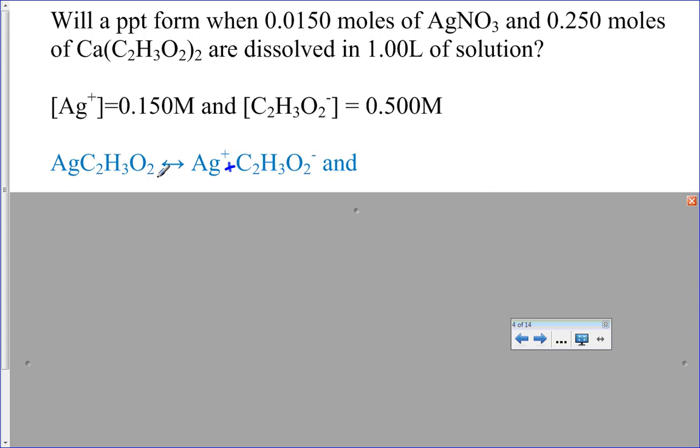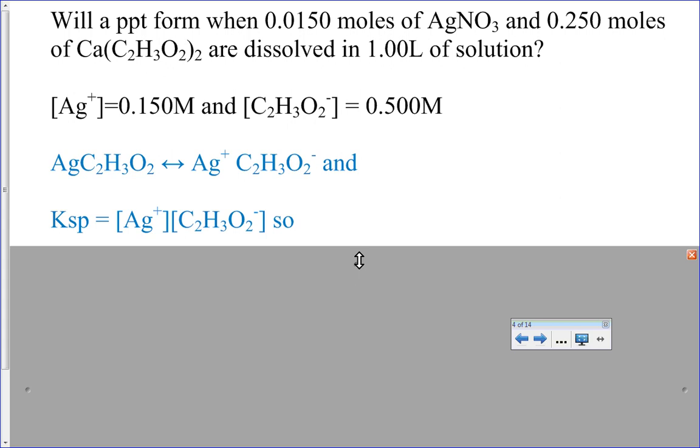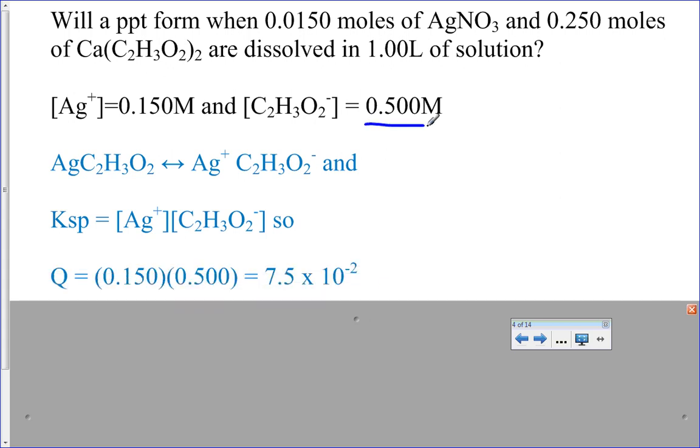That this silver acetate that forms from a 1 to 1. So I can just come up with my KSP expression, substitute in my numbers from up here, and calculate Q.